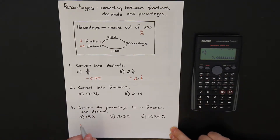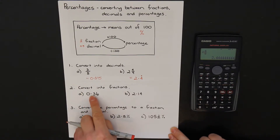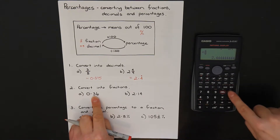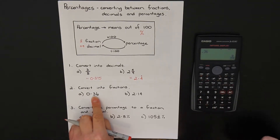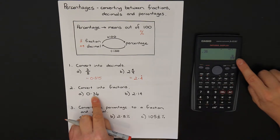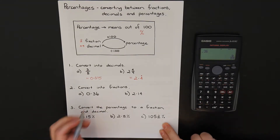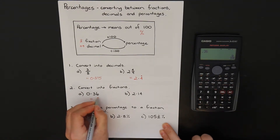I can go in reverse. Question 2 wants to convert decimals into fractions. All I have to do is type in 0.36, press equals, and my calculator changed it automatically into a fraction. If yours doesn't, push that button and it will change it for you. That gives 9 over 25.